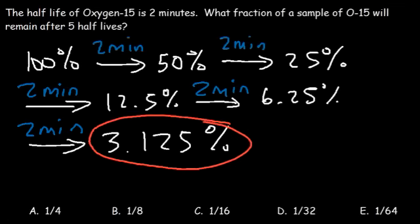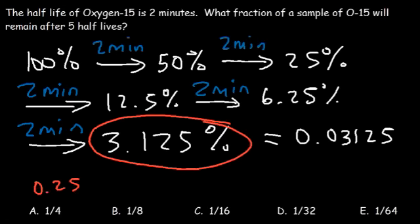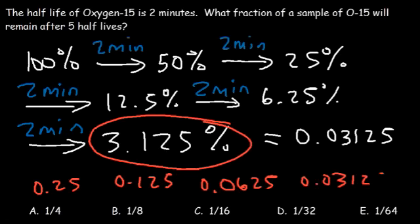The answer is a fraction, so convert the percentage to a decimal by dividing by 100, or move the decimal point two places to the left. 3.125% equals 0.03125 as a decimal. Now check the answer choices: 1/4 = 0.25, so not A. 1/8 = 0.125, so not B. 1/16 = 0.0625, so not C. 1/32 = 0.03125 — that matches, so the correct answer is D.